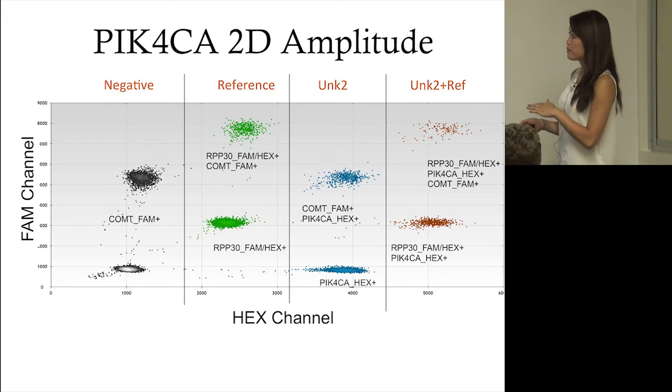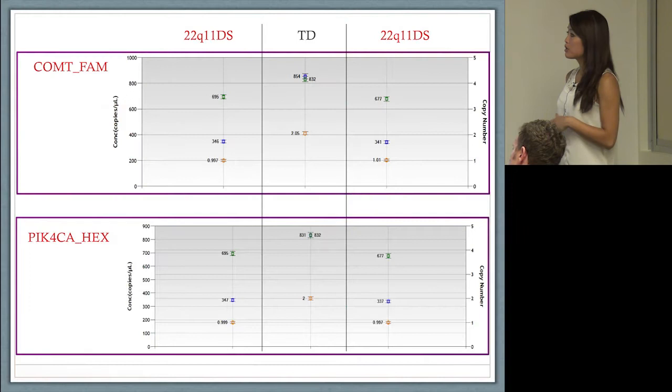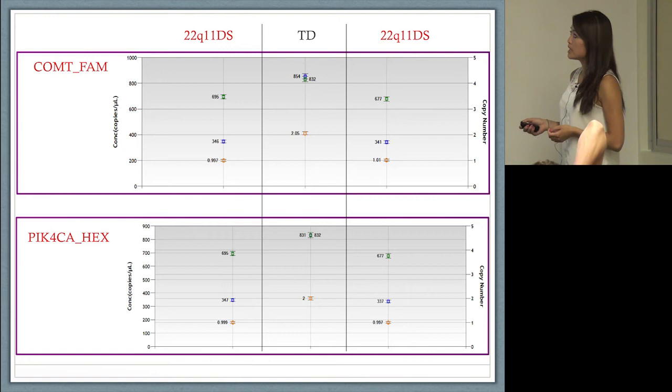For PIK4CA, the 2D amplitude plot looks exactly the same, except now you want to threshold it in terms of the HEX channel. Our results were very conclusive. We could really easily pick out between a 22Q individual and a TD individual for both the COMT and the PIK4CA primers.